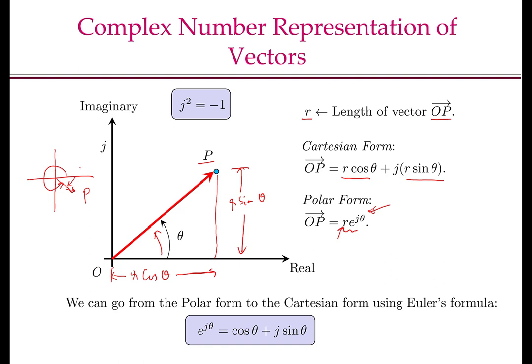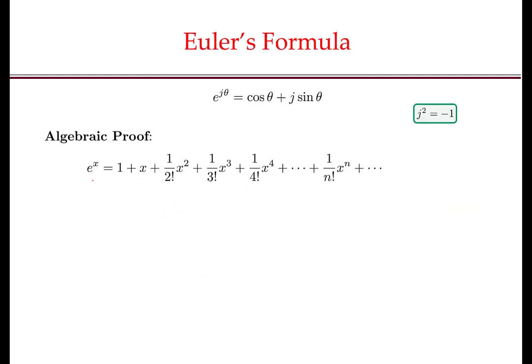We can always go back and forth between the polar form and the Cartesian form using Euler's formula, which says that e to the power of jθ is cos θ plus j sin θ. Remember that I am using j as the square root of minus 1, or the complex unit here. In many cases you may have seen i used. Since Euler's formula will be of fundamental importance to us, we will first look at the derivation of Euler's formula.